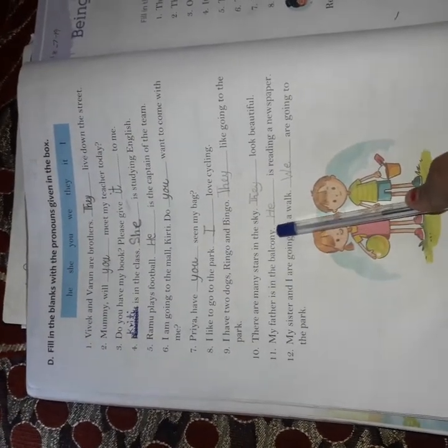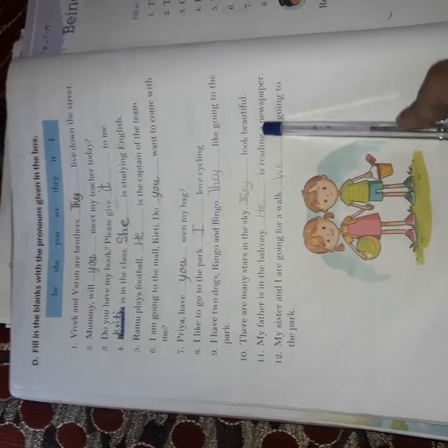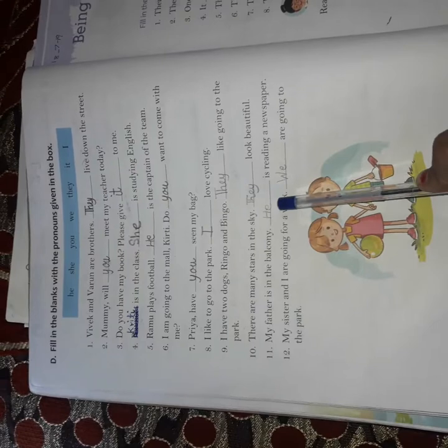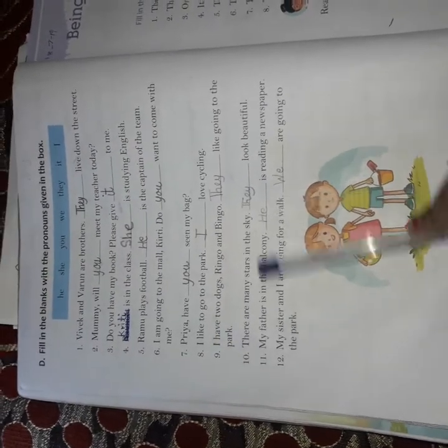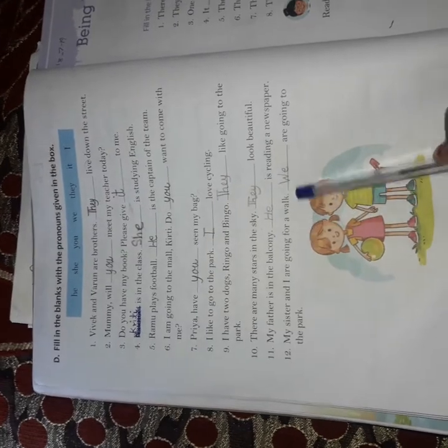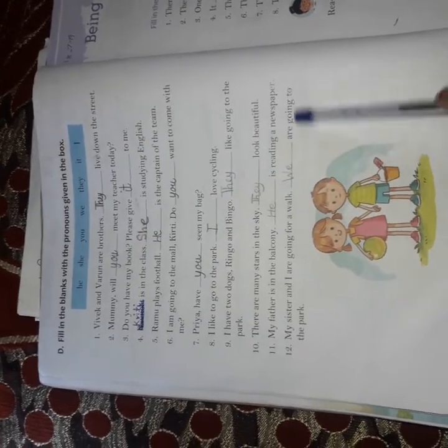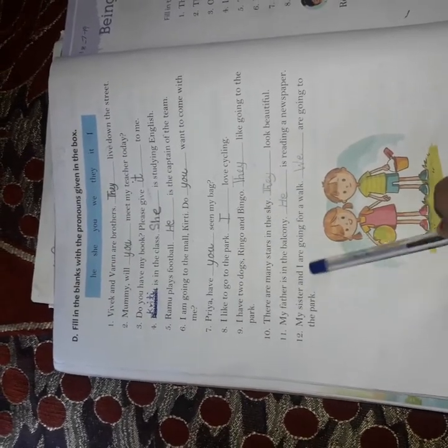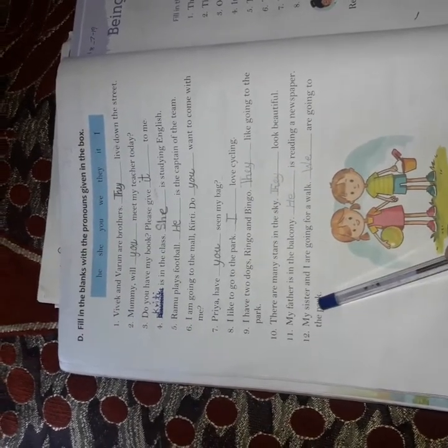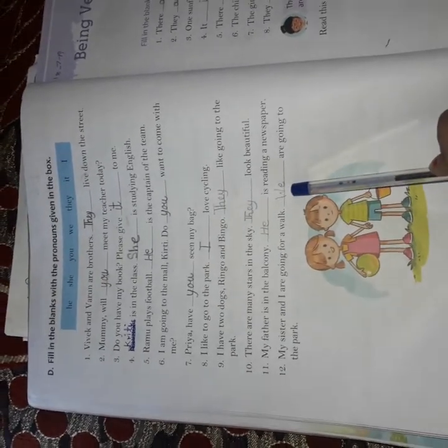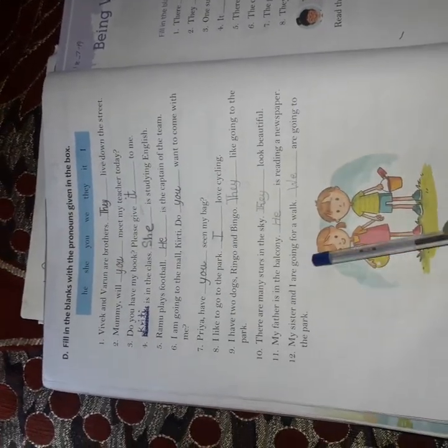Eleventh, my father is in the balcony. Dash is reading a newspaper. Now, my father will write here, he. Twelfth, my sister and I are going for a walk. Dash are going to the park. Now, my sister and I. Now, I is used here with my sister. We both are going. We will use we. We are going to the park.